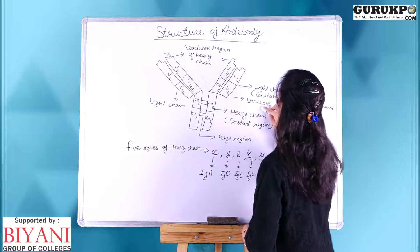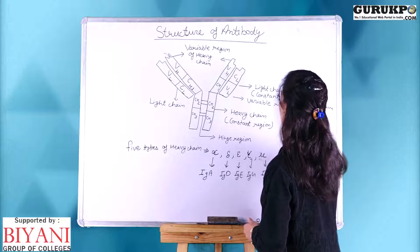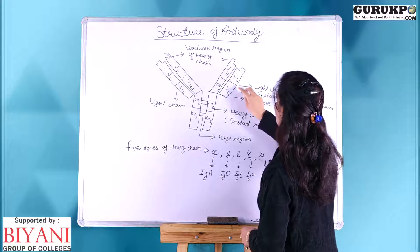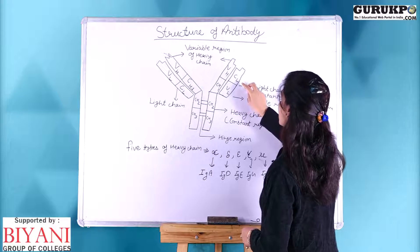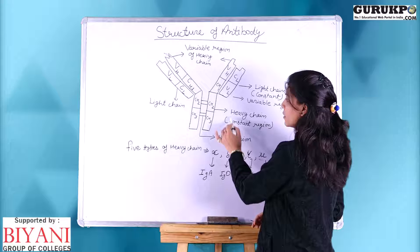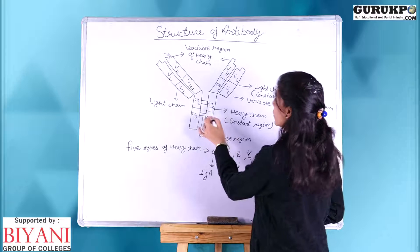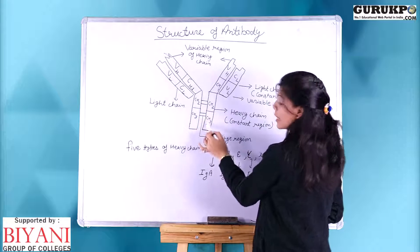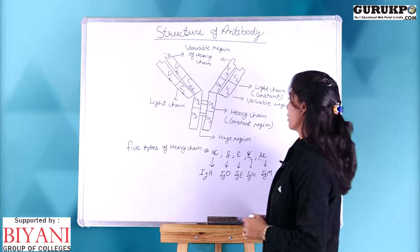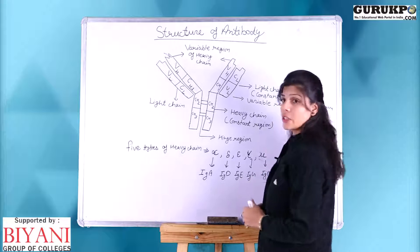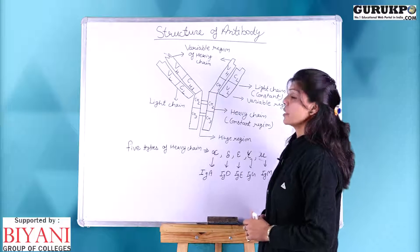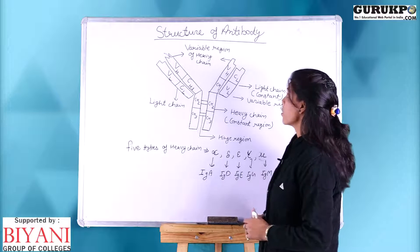There are two types of regions present in the light chain and heavy chain. These are the light chain regions denoted by CL and VL regions. CL is the constant region, while the constant region of the heavy chain is denoted by CH1, CH2, and CH3, and VH is the variable region of the heavy chain. In the constant region the amino acid sequence is similar, while in the variable region the amino acid sequence is variable.